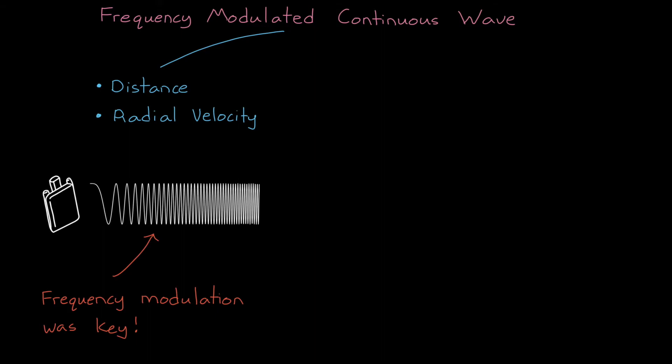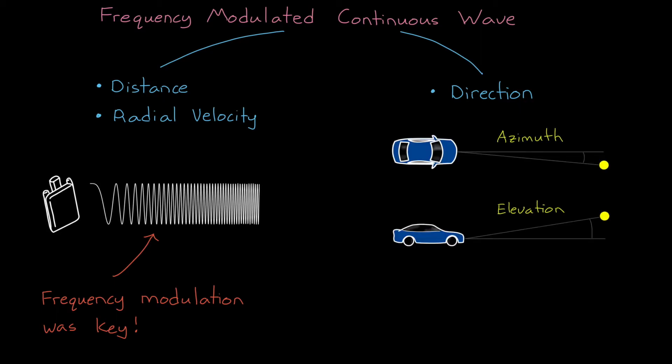In this video, let's talk about how FMCW radar is also able to determine the direction to an object, both horizontally in azimuth and vertically in elevation. To do that, we need to move past modulation schemes and turn our attention to the antenna, or more precisely to the antenna array.